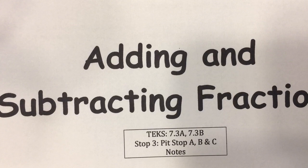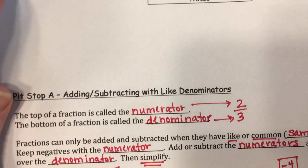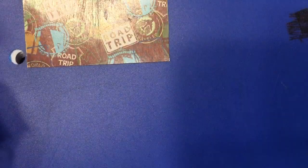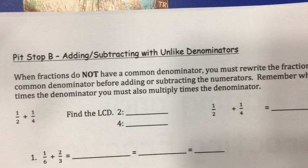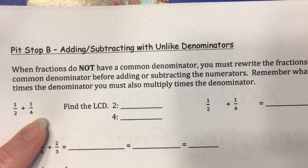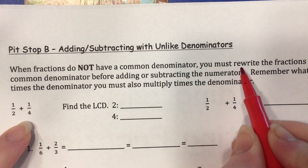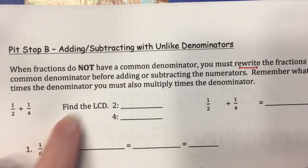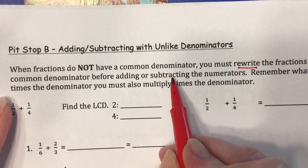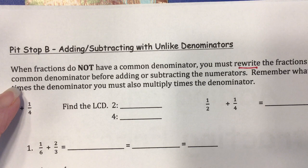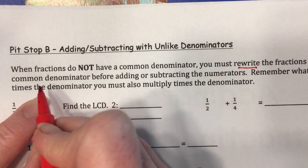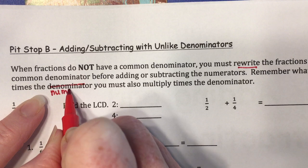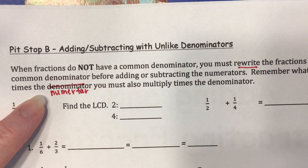This is the second video in the adding and subtracting fractions notes. In the earlier video we talked about how to add and subtract like denominators. In this video we're going to move on to how to add and subtract with unlike denominators. When fractions do not have a common denominator, you have to rewrite the fractions using the least common denominator before you add or subtract the numerators. Remember, whenever you multiply the denominator, you also have to multiply the numerator.